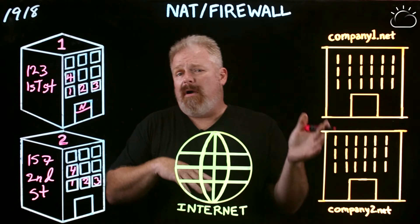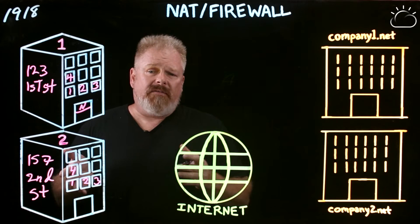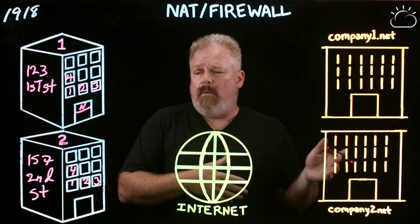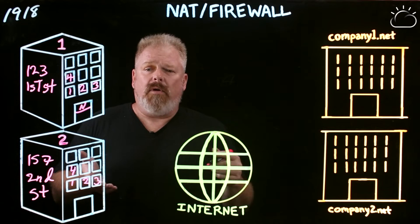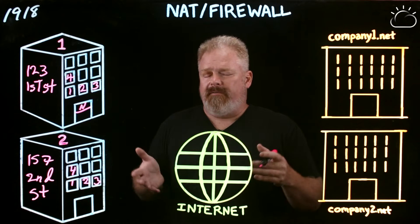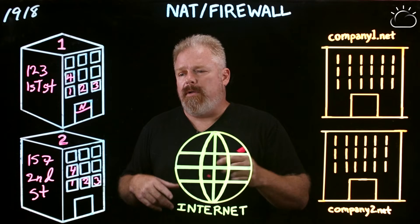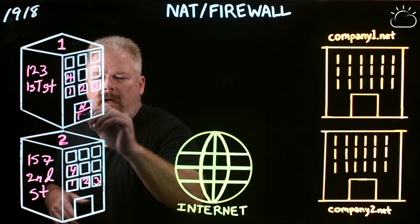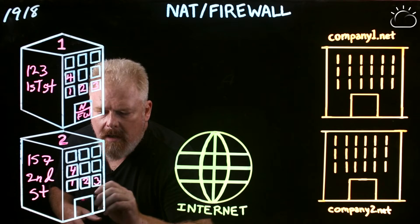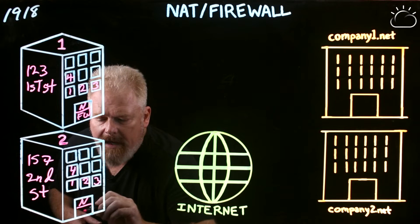The second part of this topic is firewalls. A NAT device typically goes along with a firewall function and it's usually employed in some kind of a routing device. A routing device connects two or more computer networks. So we're going to put our firewall down here in both our apartments. NAT firewall.